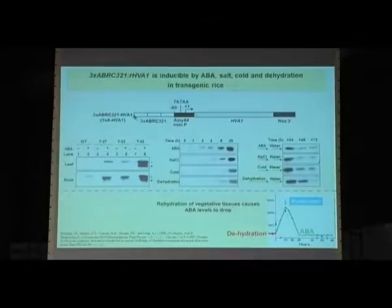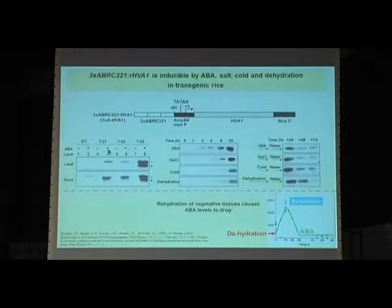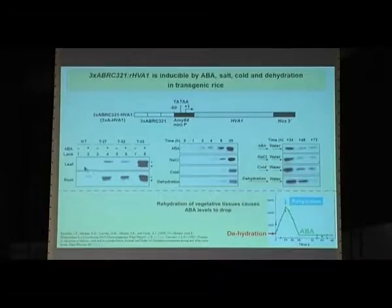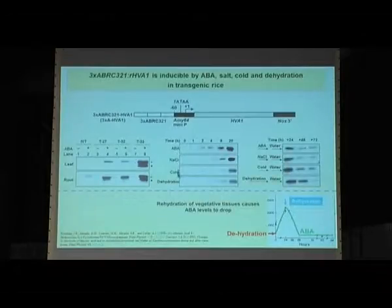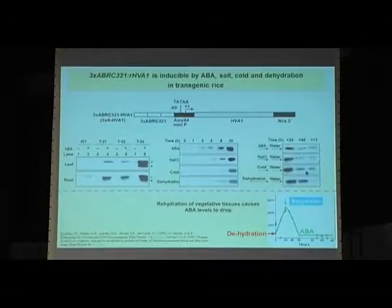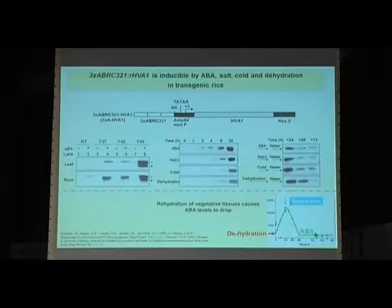We fused the ABRC321 promoter to HVA1 and showed that in transgenic rice it is induced by ABA only. Without ABA, the basal level is very low in both leaves and roots. Expression can be induced by ABA, salt, cold, and dehydration. Upon recovery to normal growth conditions, accumulation decreases gradually, which we believe correlates with the increase and subsequent decline of ABA levels.